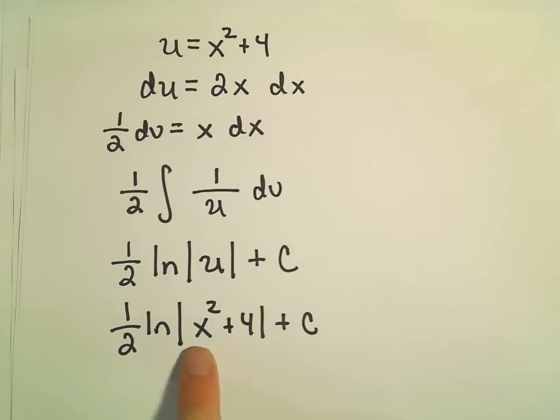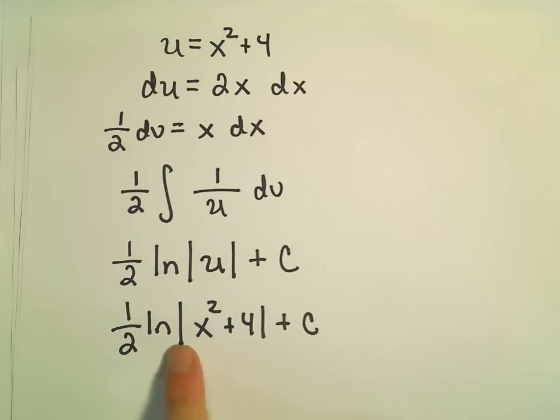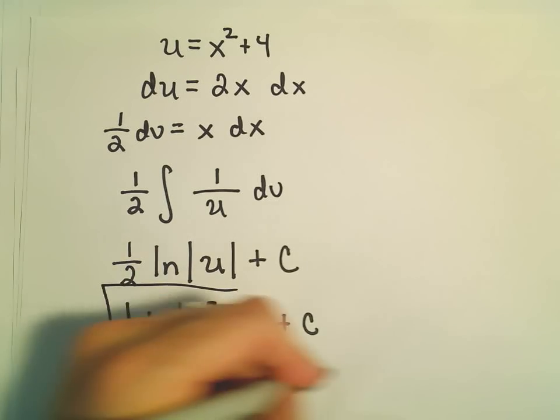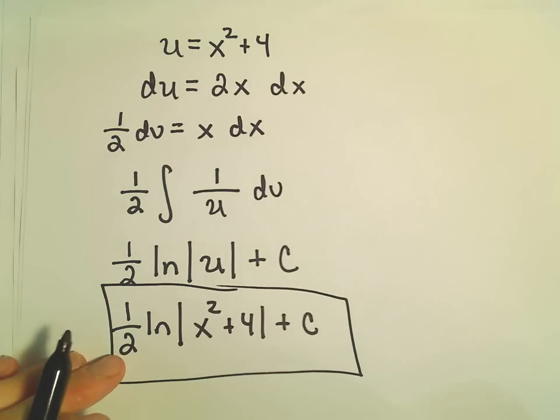Technically, for any value of x, this quantity on the inside would be positive, so you could even write it without absolute value. But in general, I just leave it an absolute value and that way I don't have to really even worry about it.